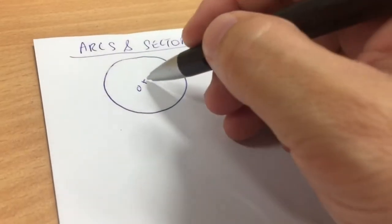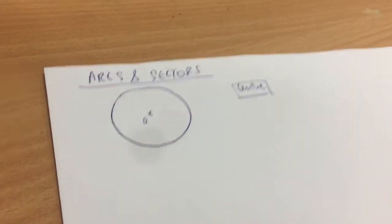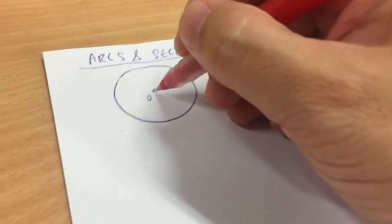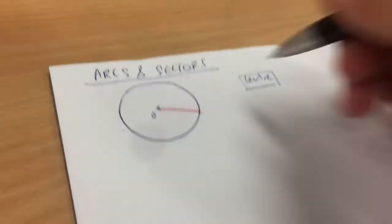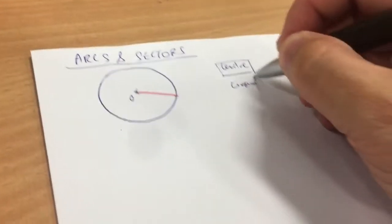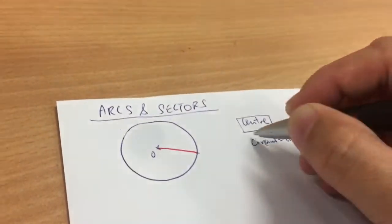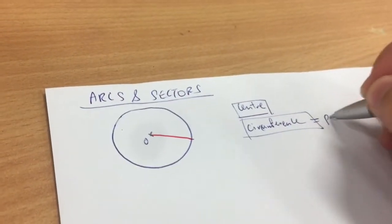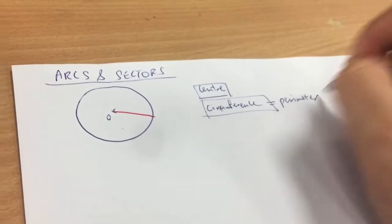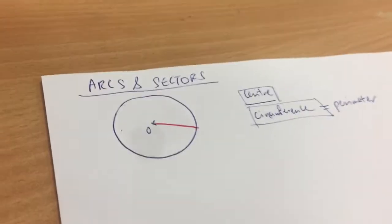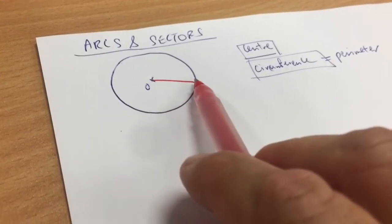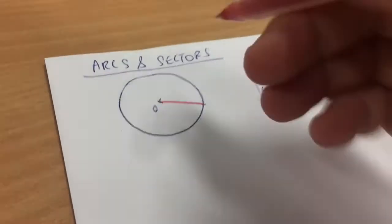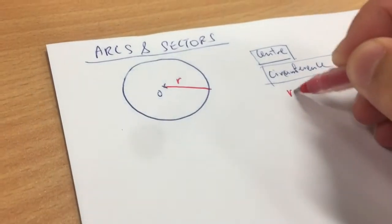So if I were to draw a straight line from the center of a circle to the circumference of a circle — circumference actually means perimeter, the perimeter of a circle. But for a circle, we don't use the word perimeter, we use the word circumference. So if I draw a straight line from the center of a circle to a point on the circumference of a circle, what do you call this? This is actually called a radius.